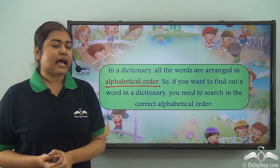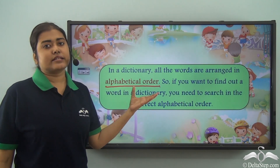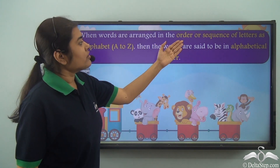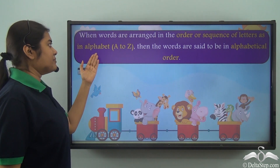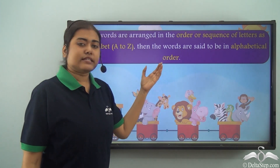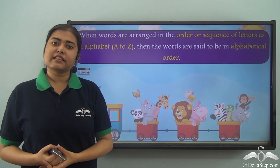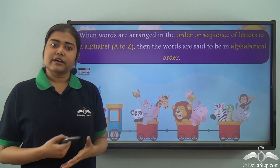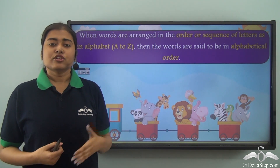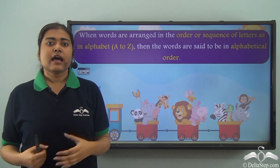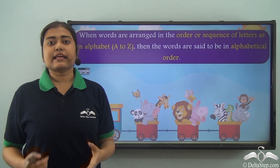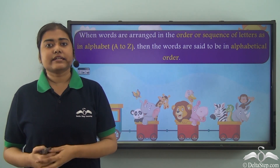We need to understand what we mean by alphabetical order. When words are arranged in the order or sequence of letters in the alphabet, as in A to Z, then the words are said to be in alphabetical order. It means the words are arranged in the order or sequence as they appear in the alphabet, starting from A till Z, following this particular order.